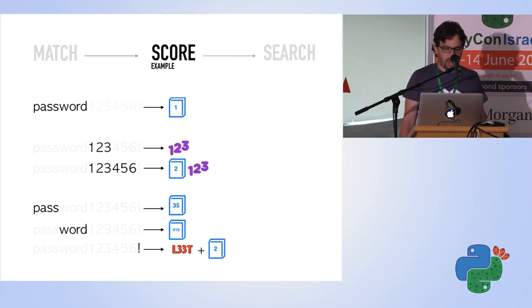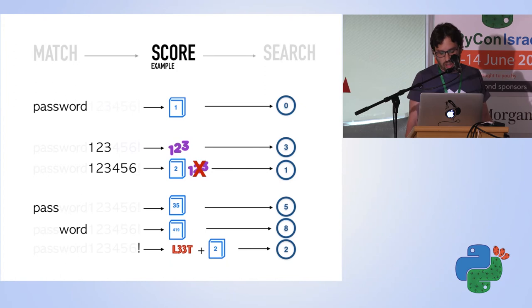For our example, I also added here, as you can see, inside the dictionaries you have the rank. For example, password is ranked first, so if you take the log of that it's zero. Another example is 123456, which is rank two, so the log of that is one, and so on. We also take the minimal number because we're looking for the weakest link in our password.